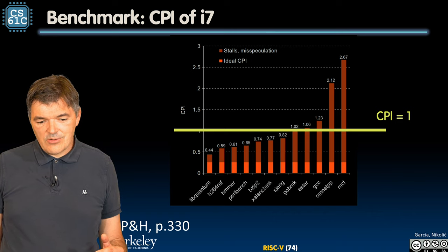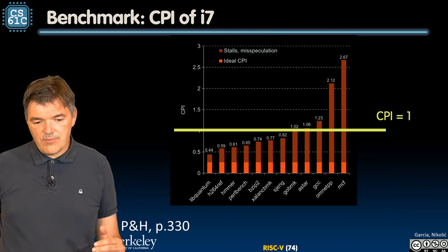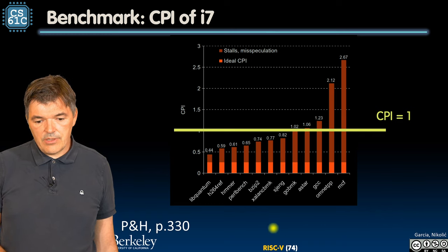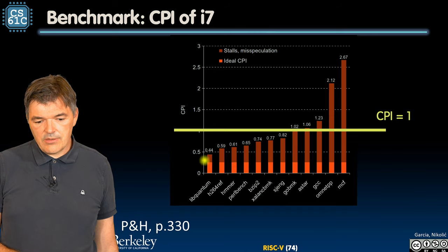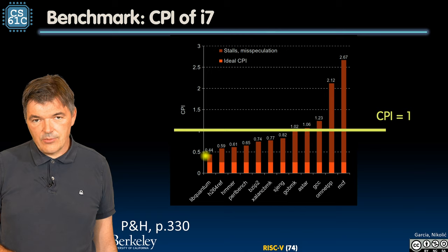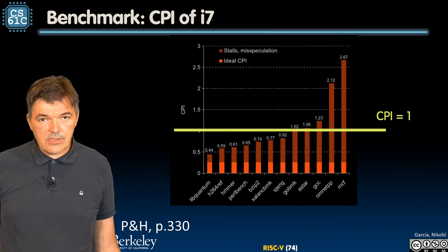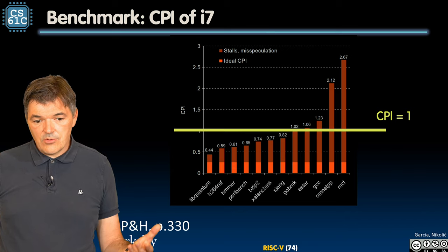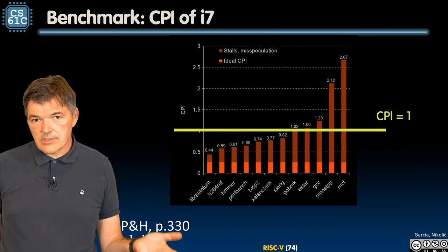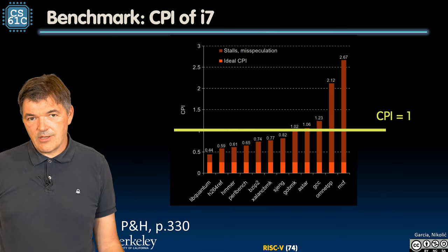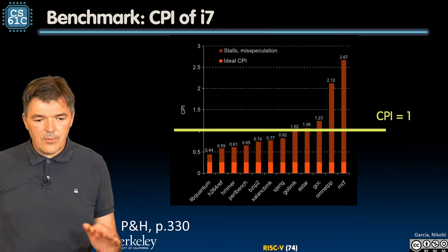There is another interesting thing to notice on this graph. There is a DL CPI sitting around 0.25. Then there is a realistic CPI that rarely gets below 0.5. So the ideal CPI is 0.25, or about a quarter, and the realistic one is around 0.44. This realistic CPI is due to stalls, misspeculation, and handling hazards.